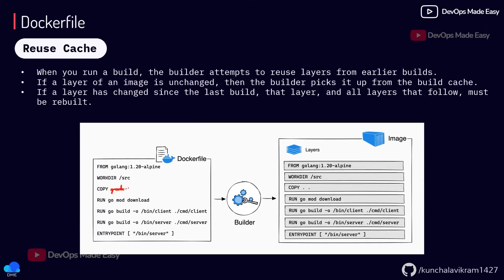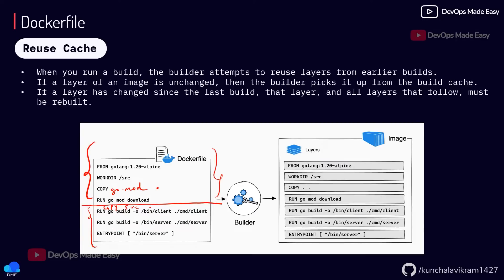If you copy the dependency file — go.mod — first and run the download command, these layers are now common for most builds, because go.mod doesn't change often. So these steps are pretty much fixed and can use the cache every time. Then you copy your source files in the next step. Only from that point will layers be rebuilt. Always make sure that if any files or steps are not changing, put them at the beginning of the Dockerfile so Docker can use that cache every time — that is the meaning of reusing cache.